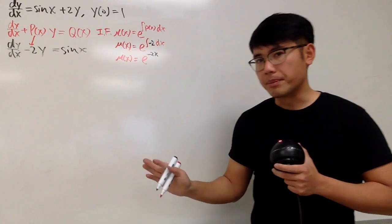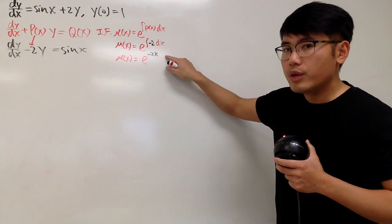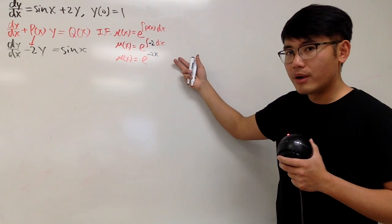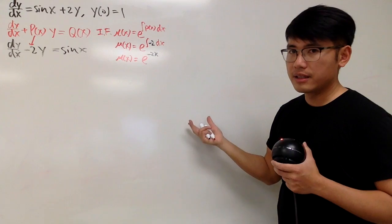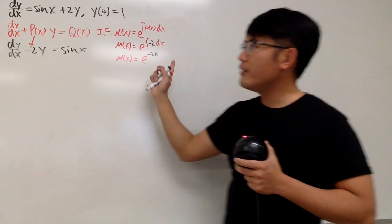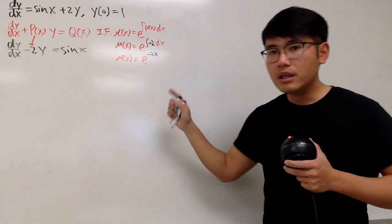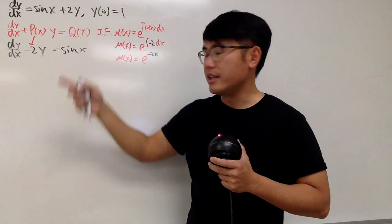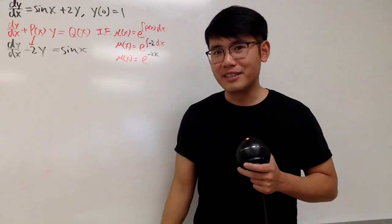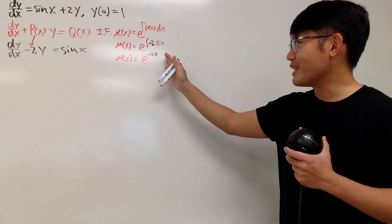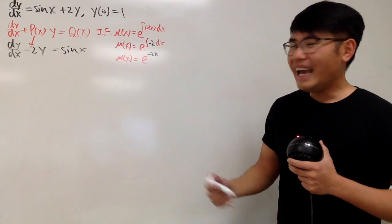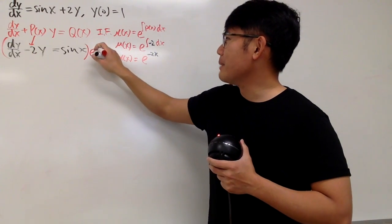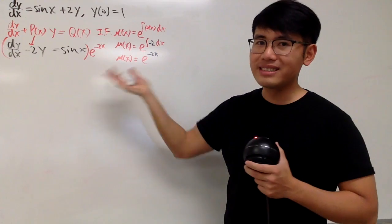So our integrating factor is e to the negative 2x power. You don't need to worry about the plus c here — if you do put down plus c, you can rewrite it as e to the negative 2x times e to the c, which is just a constant. We'll multiply everybody by that, and since it's an equation, we can divide everybody by that constant, so just don't put down that constant in the first place. We'll take this equation and multiply everybody by e to the negative 2x.